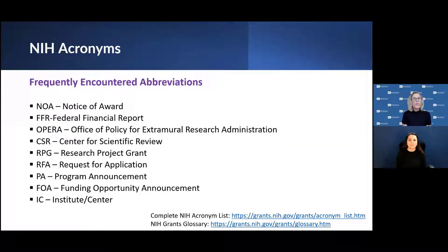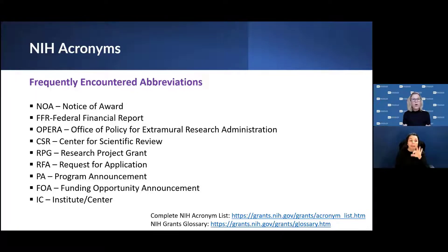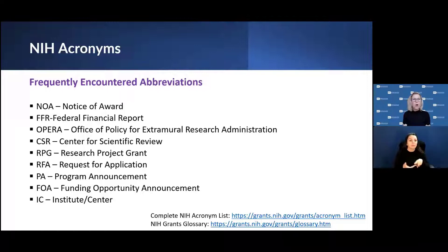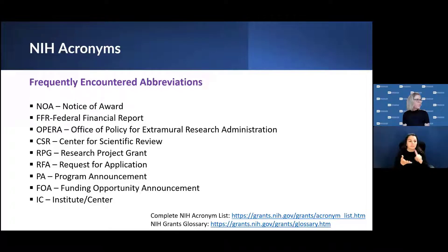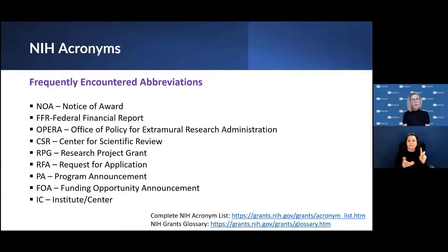Here are some frequently encountered acronyms: NOA is Notice of Award; FFR is Federal Financial Report; OPERA is the Office of Policy for Extramural Research Administration; CSR is Center for Scientific Review; RPG is Research Project Grant; RFA is Request for Application; PA is Program Announcement; FOA is Funding Opportunity Announcement; and IC is Institute Center. Visit the grants.gov website for a complete list of the NIH acronym list and glossary.